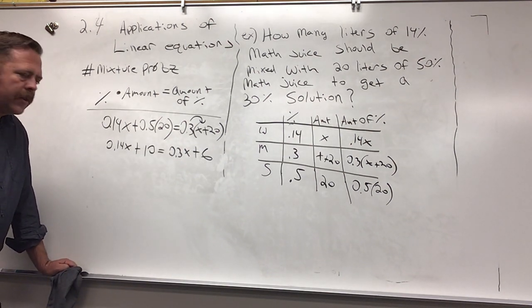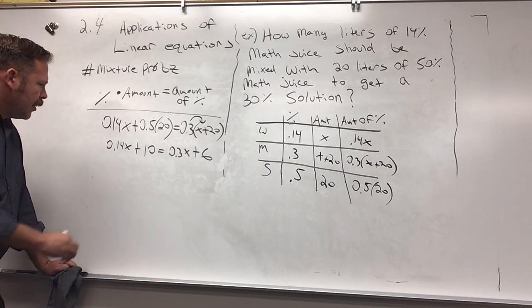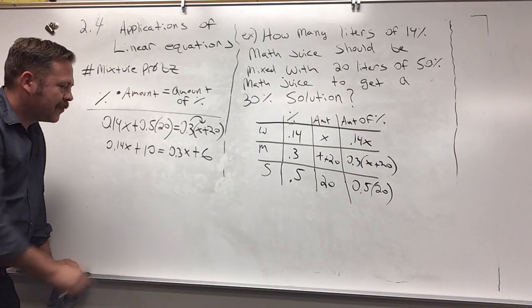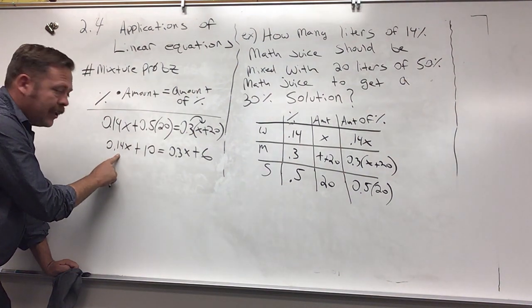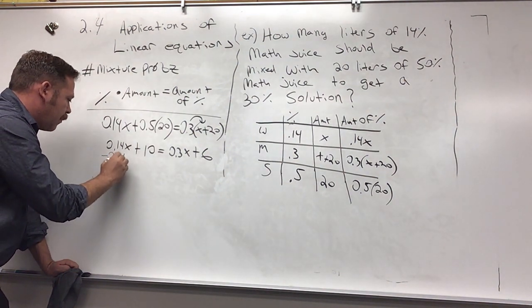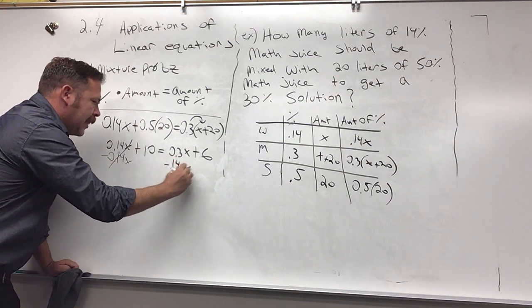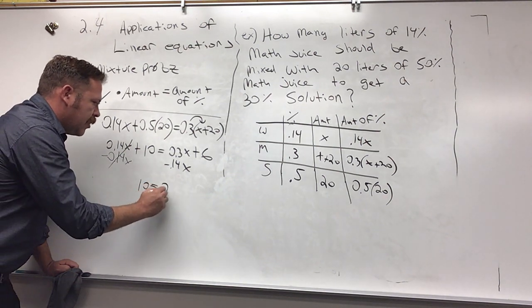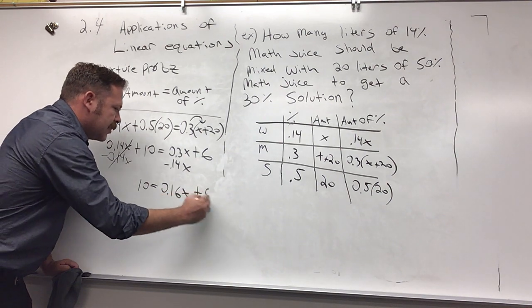Now I'm at the point in the equation where I want to get all the variables to one side. I have 0.14x and 0.3x. Now careful, that's really 0.30x. Sometimes we think this is the smaller number but this is bigger than this number. So I'm going to subtract 0.14x, and then I get 10 equals 0.16x plus 6.